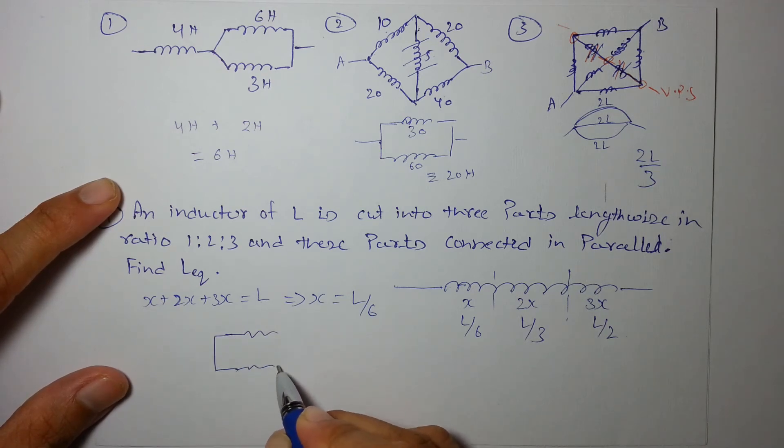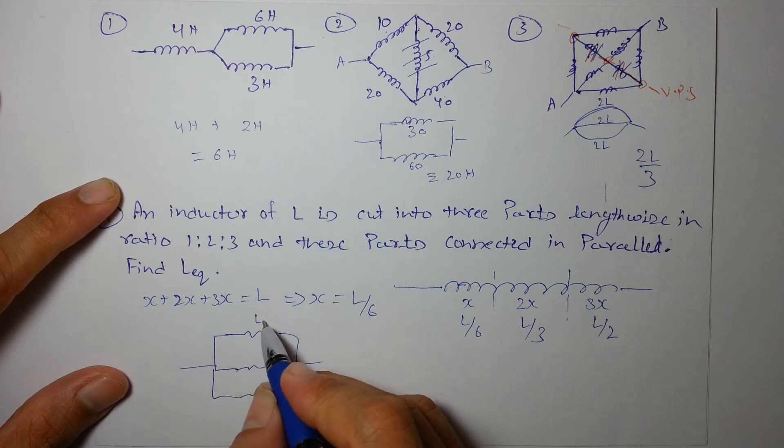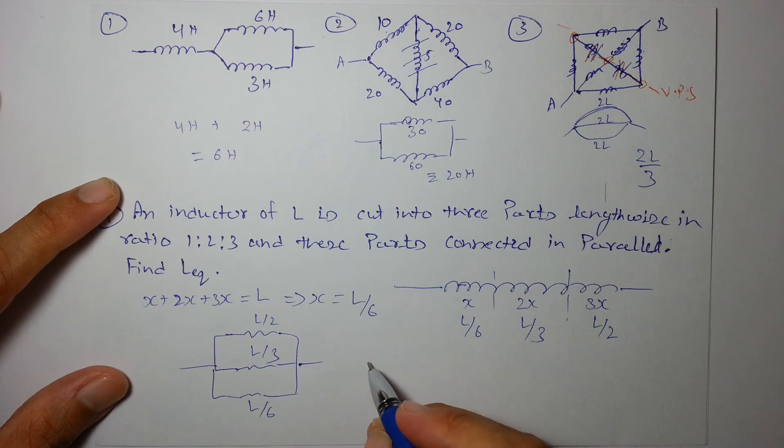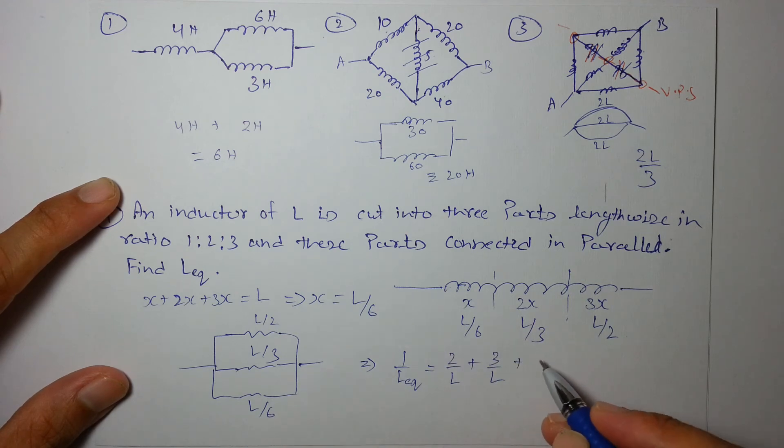When they are connected in parallel, we get a combination L/2, L/3, L/6. So 1/L_eq will be 2/L + 3/L + 6/L. Just add them: this is 11/L. So L equivalent is L/11. That is the equivalent inductance of the combination. Enjoy!